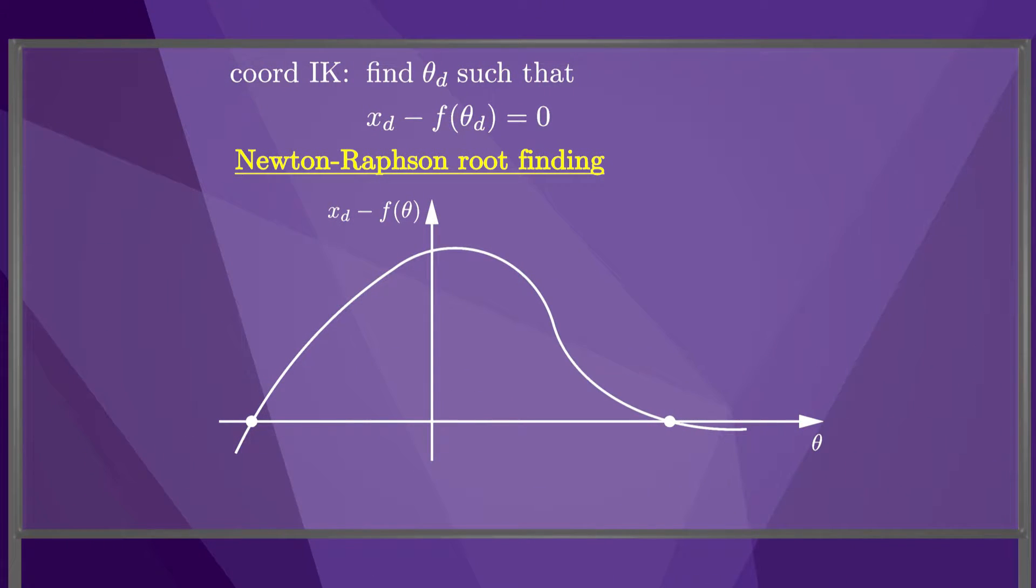Here's a plot of the desired end effector position x-d minus f of theta as a function of theta. The roots of this function correspond to joint values that solve the inverse kinematics. In this example, two values of theta solve the inverse kinematics.